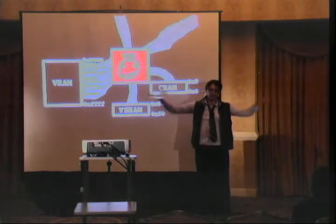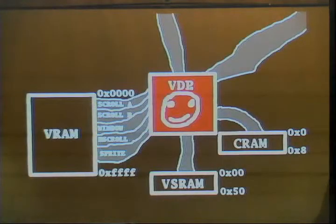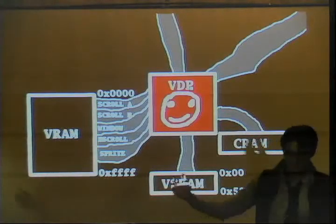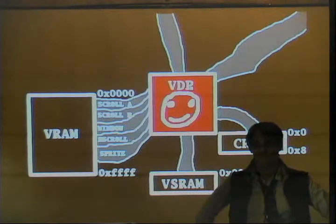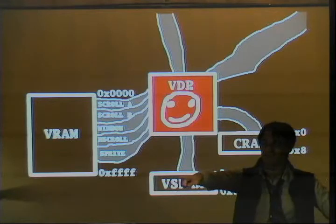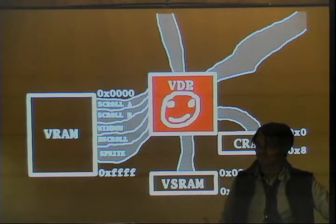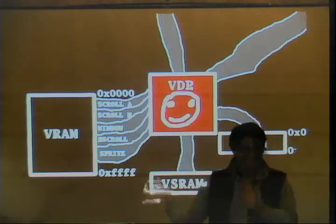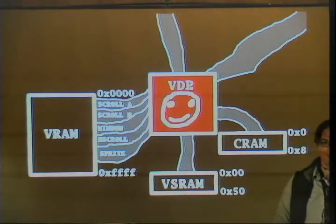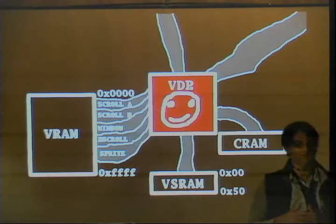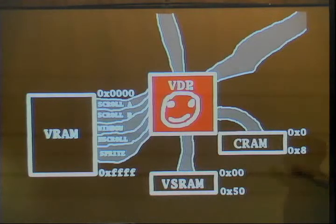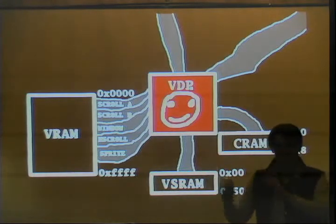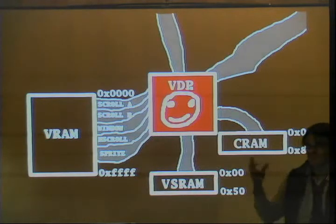VSRAM controls scrolling up and down. CRAM — I say CRAM all the time and no one knows what I'm talking about — controls the colors. You can have 64 colors. It has 64 colors from a palette of 512. It's 9-bit, 3-bit associated with RGB. So that's what's stored in CRAM. It's stored in a funky way where it's not one after another — there's a gap there. It's not mapped as you would think it would be. Just keep that in mind.